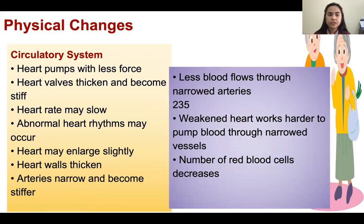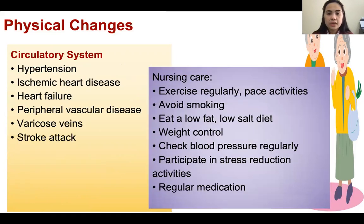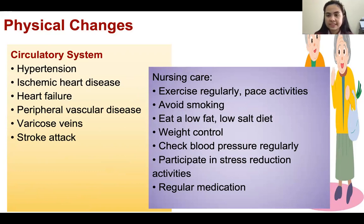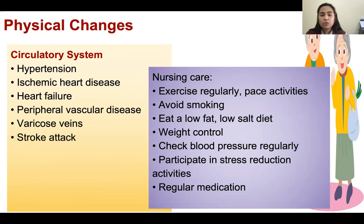For circulatory changes, they will have hypertension, ischemic heart disease, problems with clots, heart failure, peripheral vascular disease, varicose veins, and stroke. What we are going to do: exercise regularly to have good blood circulation, avoid smoking, and eat a low-fat, low-salt diet.